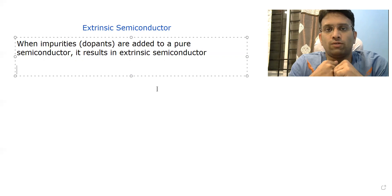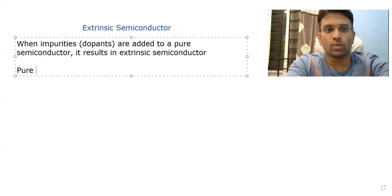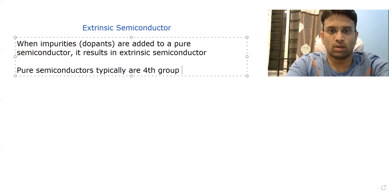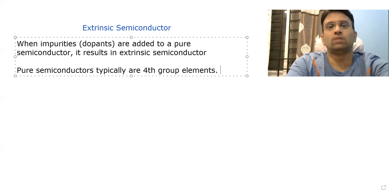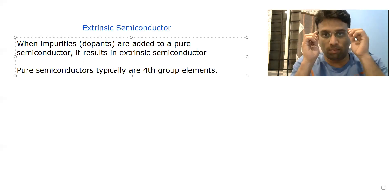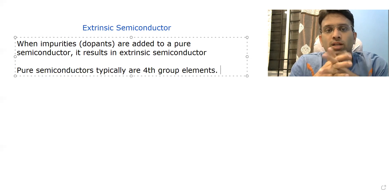There are two ways of doping. First of all, we shall recognize that pure semiconductors are fourth group elements. The most famous semiconductors like silicon and germanium are fourth group elements.